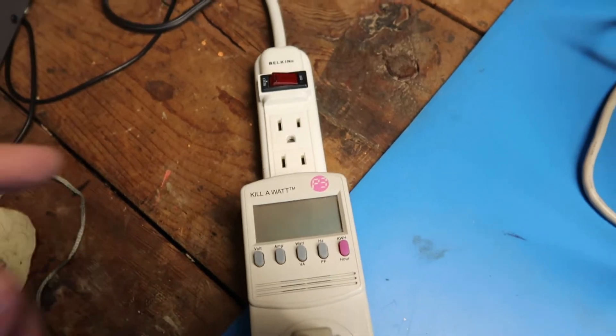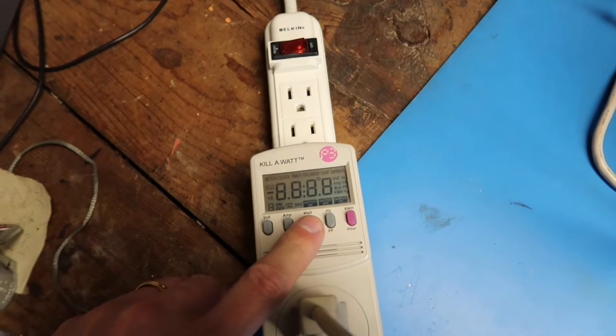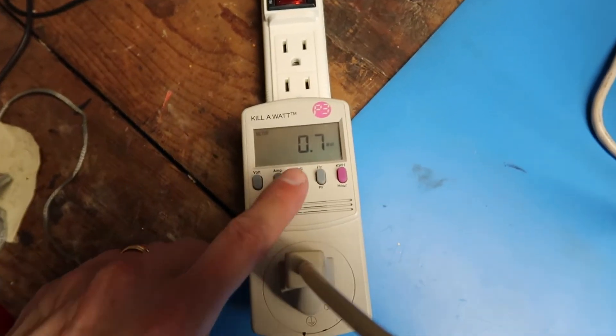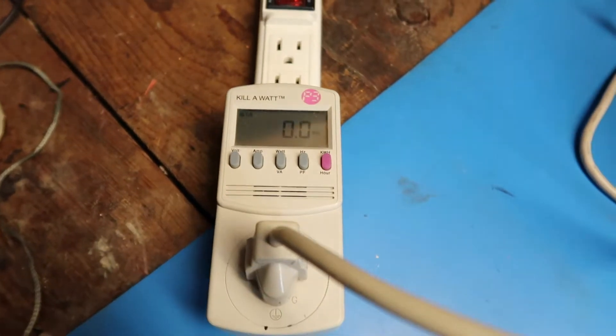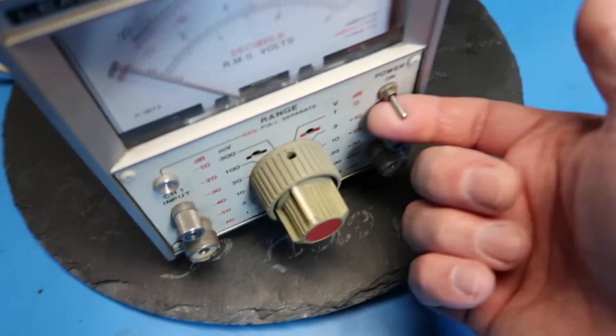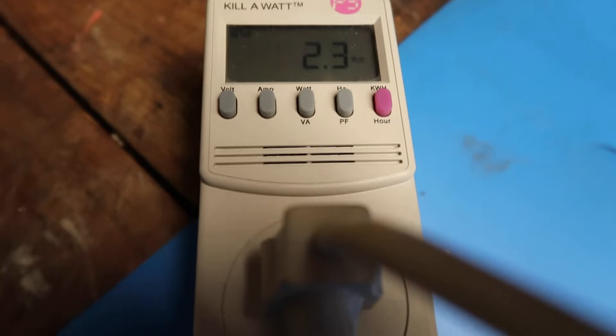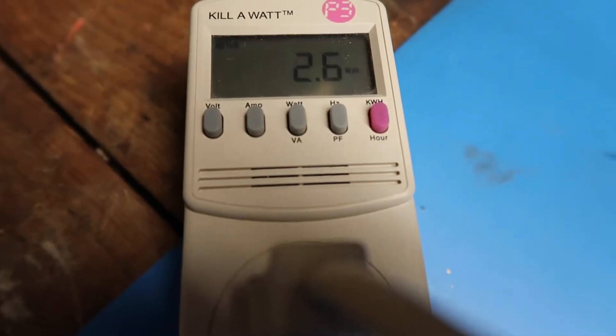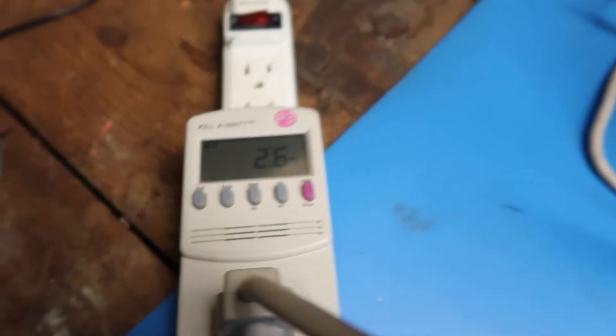So as our very first test we'll try out this kilowatt-wattmeter, put it into watts mode, showing zero right now with the unit off. Turn it on over here, 2.6 watts after it settles in. So that's a reasonable value for something like this.